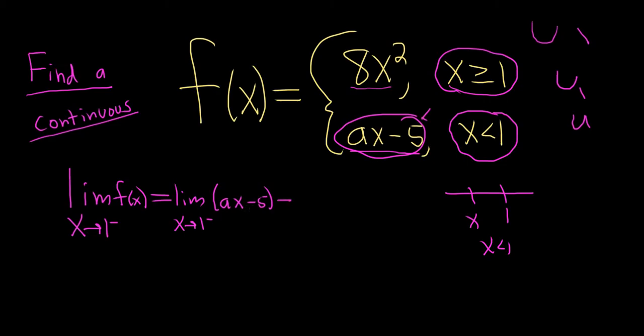Now we can go ahead and plug in the 1. When we do that, we drop the limit sign. So it's a times 1, which is just a, minus 5.